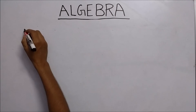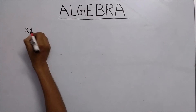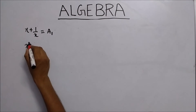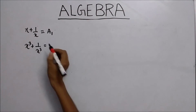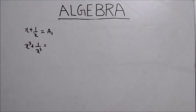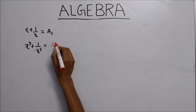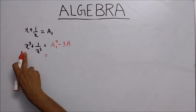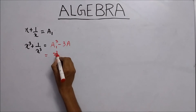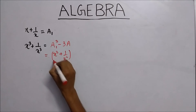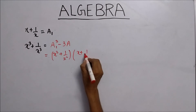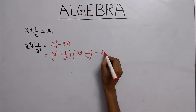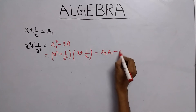Now we will learn the second formula. Whenever you see x plus 1 upon x equals a1, and you have to find x cubed plus 1 upon x cubed, there are two methods. The first method is a1 cubed minus 3a1. The second method is to split the power of 3 in the form of x squared plus 1 upon x squared. Here, x cubed plus 1 upon x cubed equals a2 times a1 minus a1.